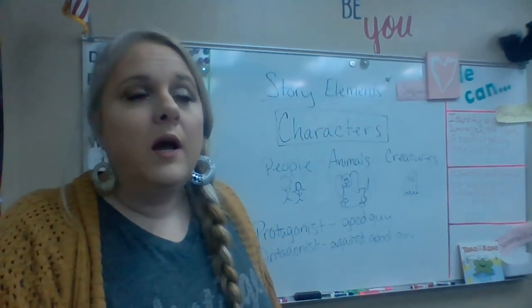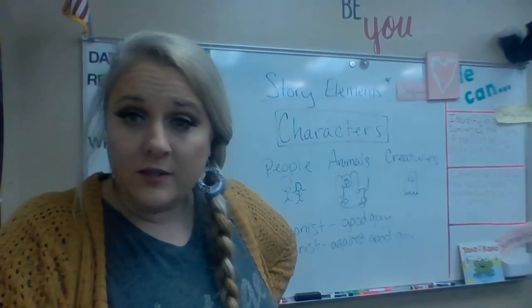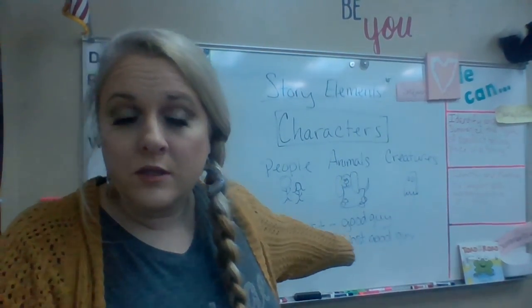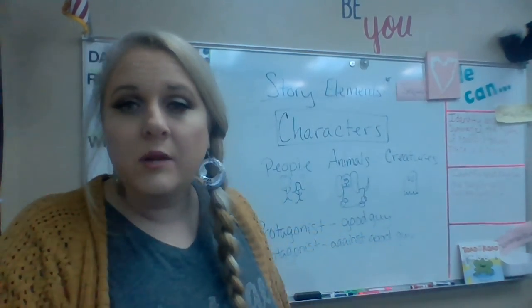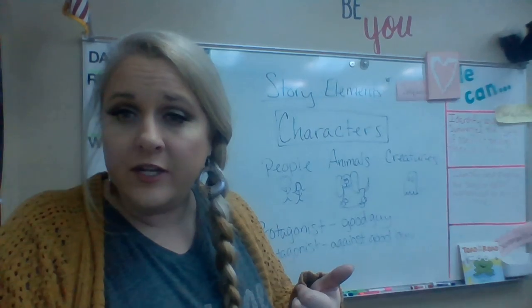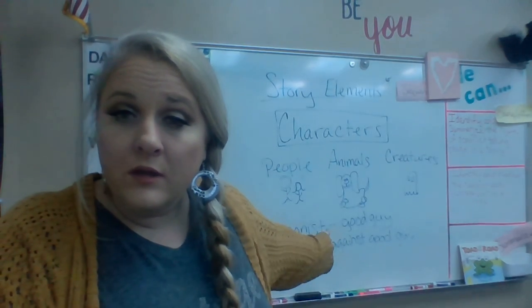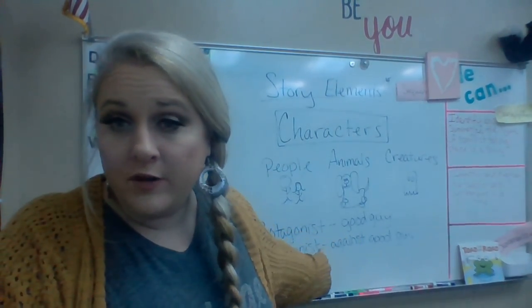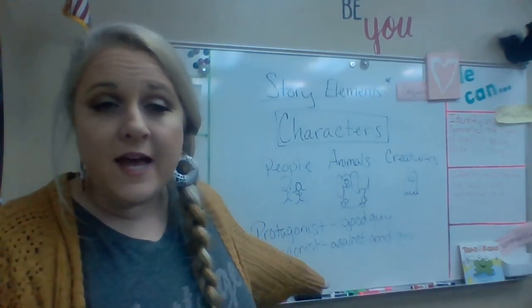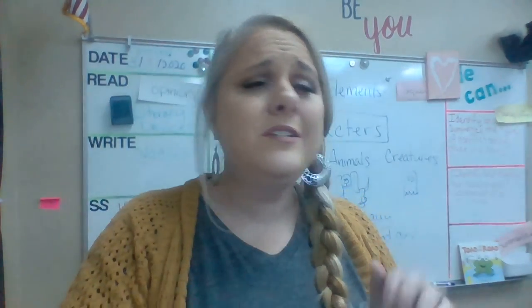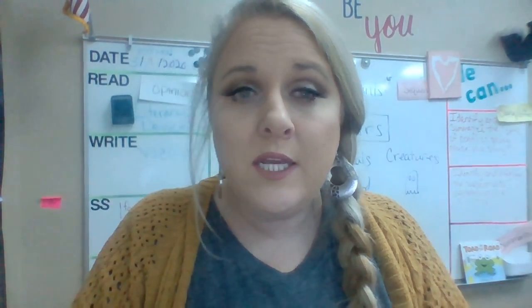Make sure you remember: protagonist is the good guy, antagonist is the bad guy or bad force. For example, if you're reading a book about civil rights and Martin Luther King Jr., the protagonist is Martin Luther King Jr., and the antagonist is the laws of segregation — the Jim Crow laws — and society being against what he wanted for African Americans. Characters can be people, animals, or creatures. You guys already know all this. I love you — stay smart, stay safe, stay clean, and pray for me because this toilet keeps flushing!